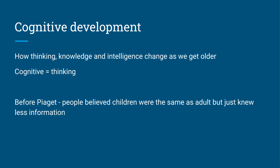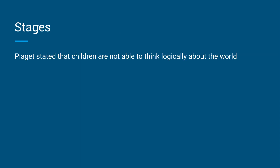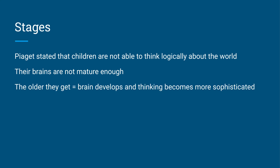Now before Piaget, people believed that children were basically the same as adults - they just knew less information. Then Piaget came along and said children think in a very different way to adults. The first thing was that Piaget said children were not able to think logically about the world, that their brains weren't mature enough to do that. And as they got older their brain starts to develop and their thinking starts to become more and more sophisticated.